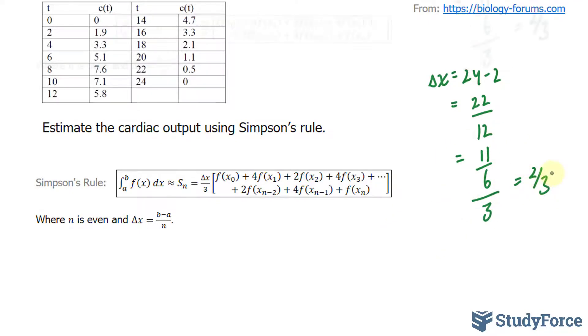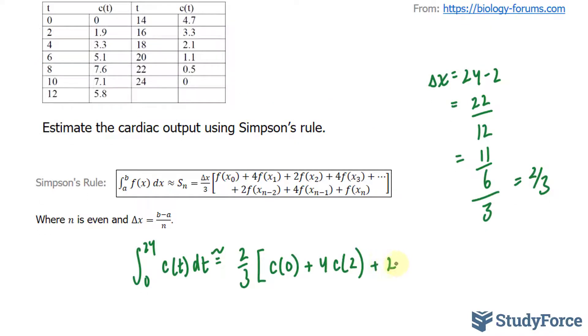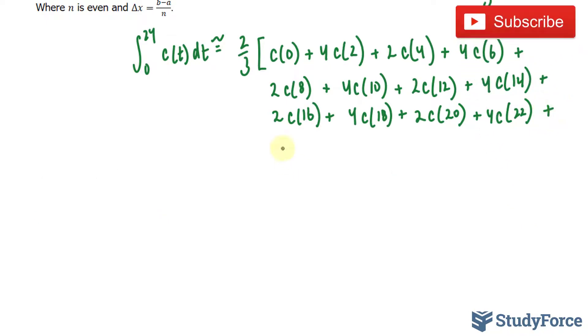So our function can be the integral between 0 and 24 of c(t) dt, which is equal to or approximately equal to 2 over 3, square bracket, c(0), plus 4c(2), and I'm using this table, plus 2 times c(4), plus 4 times c(6), and we'll continue this all the way to 24. And finally, plus c(24), close bracket.